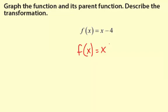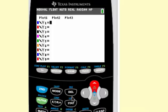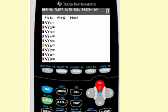For my calculator I've switched to a color calculator and I'm gonna graph the function in blue, so y equals x minus 4. The parent function I'm gonna graph y equals x.